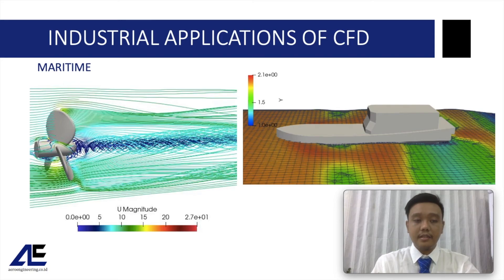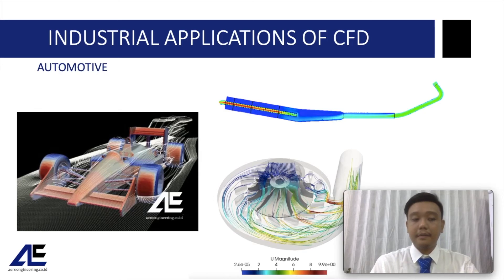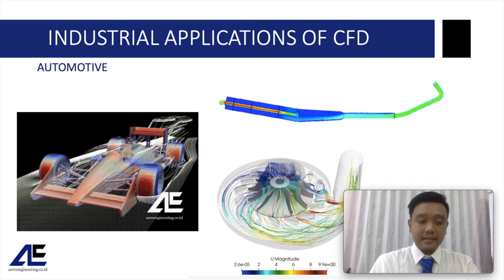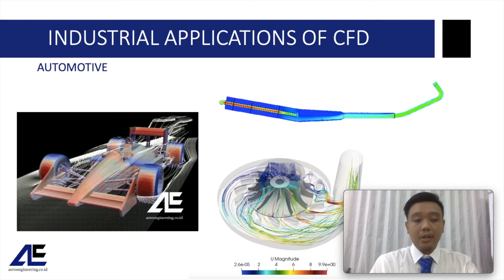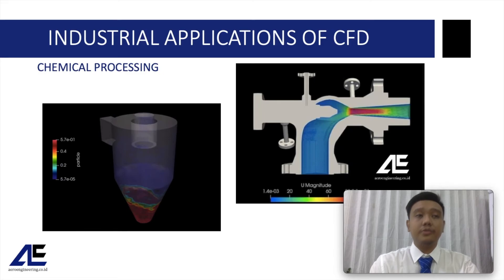For the automotive manufacturing industry, digital prototyping is intensively used to optimize or predict the performance of parts before mass production. Common tasks include predicting the drag force on a racing car, predicting pressure drop or noise from a muffler, or predicting turbocharger efficiency.